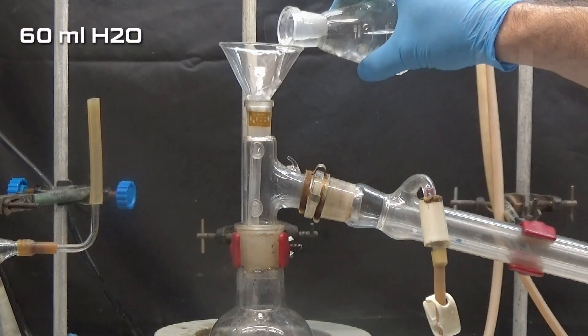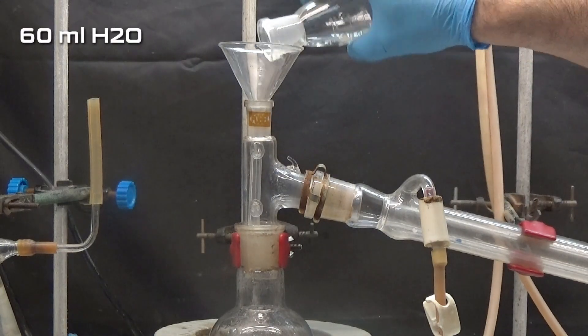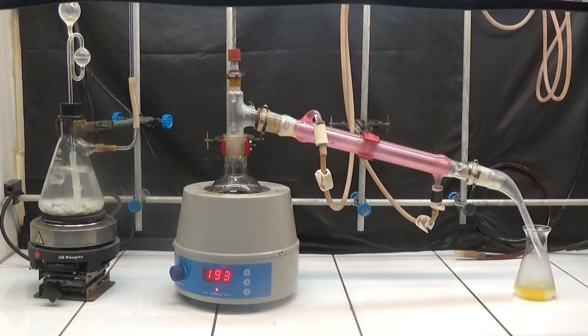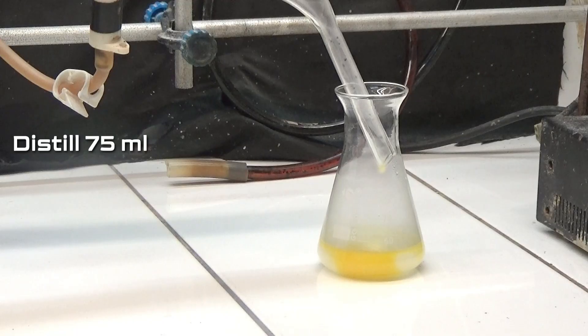We add 60 milliliters of water and set up a steam distillation. Distill 75 milliliters. The distillate contains the unreacted aniline.